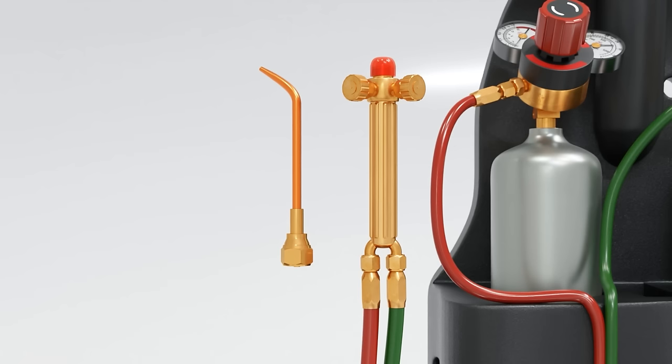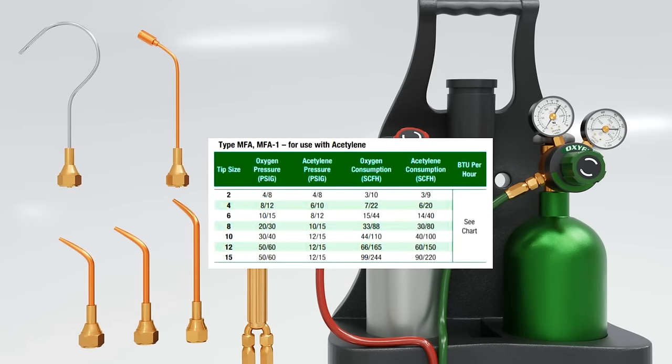Next, and very importantly, choose the proper torch tip for the job at hand. Use manufacturer's charts to decide on an appropriate tip size depending on the work being done. Larger tips produce more BTUs and are the right choice for larger jobs, but this will also affect the pressures you should set your oxygen and acetylene to.